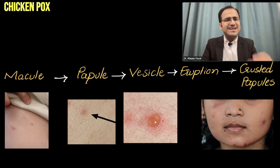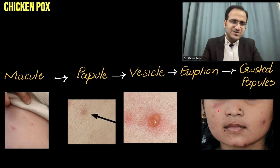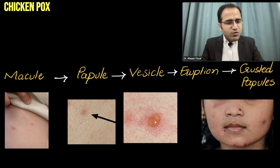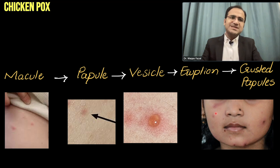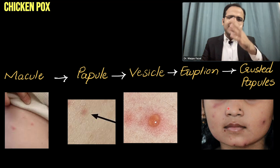After that, this vesicle erupts. There is crusting and a scab is formed — eruption, crusting, and scab formation. Until all the lesions have fully crusted, the patient is infectious. After crusting of the lesions, the patient is non-infectious.